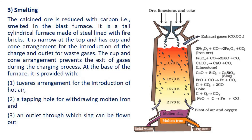Smelting: The calcined ore is reduced with carbon, that is, smelted in the blast furnace. It is a tall cylindrical furnace made of steel lined with fire bricks. It is narrow at the top and has a cup and cone arrangement for the introduction of the charge and outlet for waste gases. The cup and cone arrangement prevents the exit of gases during the charging process. At the base of the furnace, it is provided with a tuyeres arrangement for the introduction of hot air. A tapping hole for withdrawing molten iron.